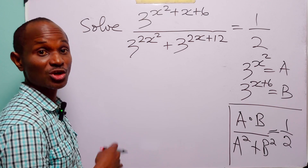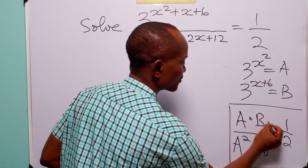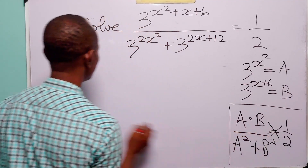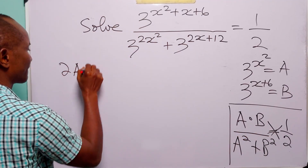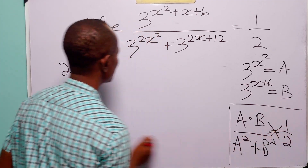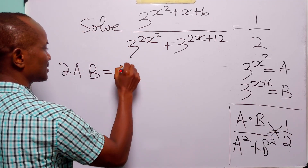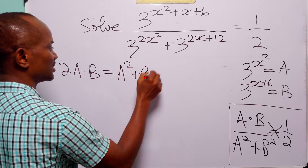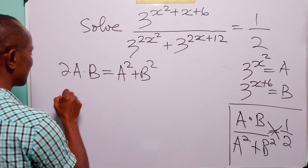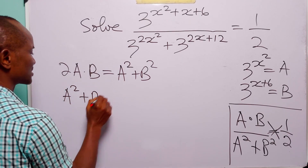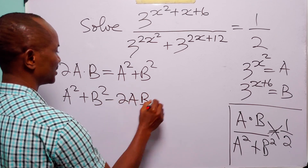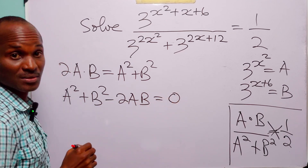Now, to simplify this equation, the next thing we have to do is to cross multiply. And when we do that, we have that 2 times ab is equal to a squared plus b squared. Rearranging this equation, we have that a squared plus b squared minus 2ab is equal to 0.